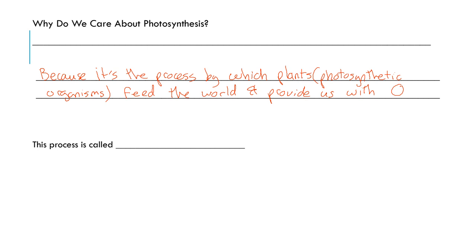And obviously this process is called photosynthesis. That's why it's important - this is the process by which plants and photosynthetic organisms make food for the world and provide us with oxygen.